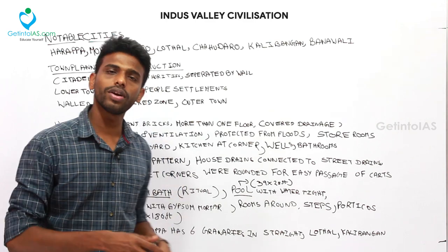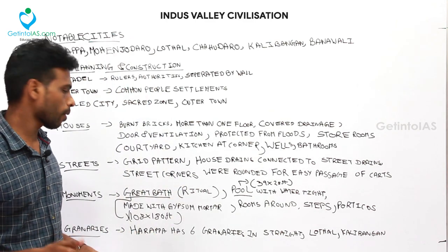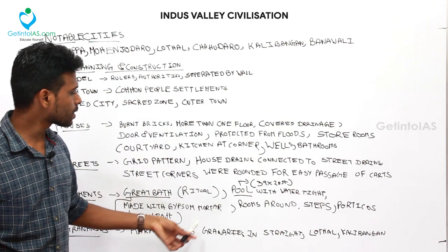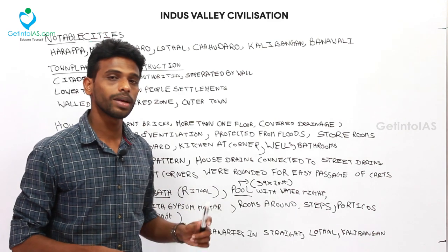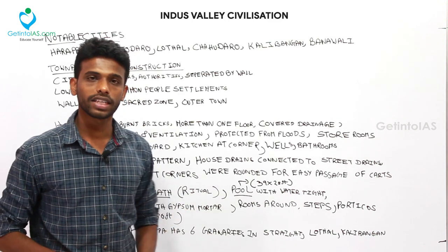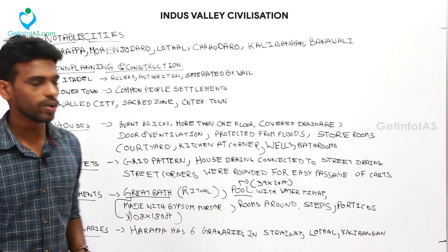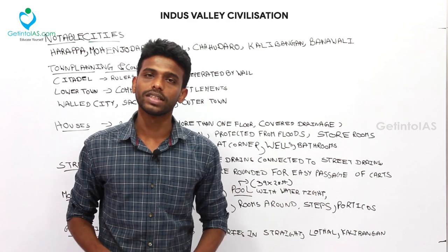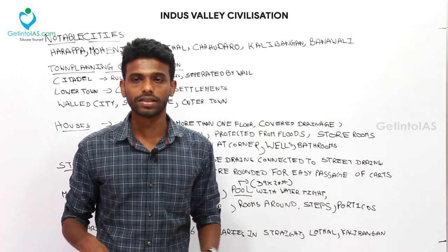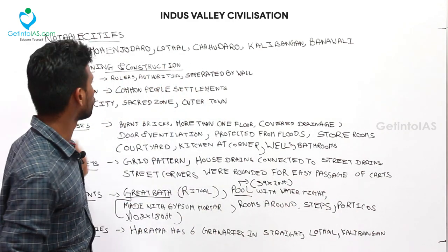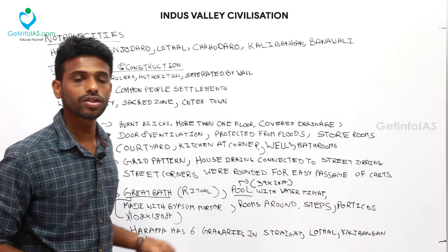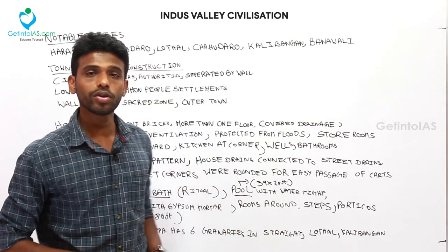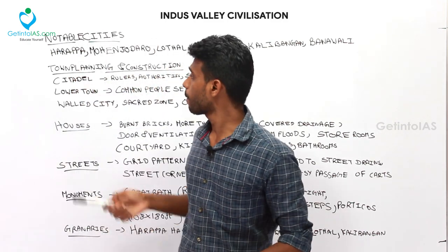Granaries are the places where food grains are stored and threshed. Harappa has six granaries in a row — an important excavation finding. Lothal and Kalibangan also have evidence of granaries. This concludes the infrastructure of the Indus Valley period.